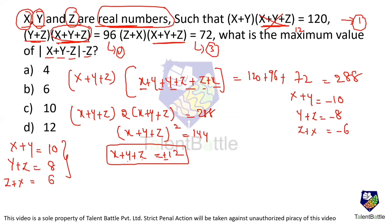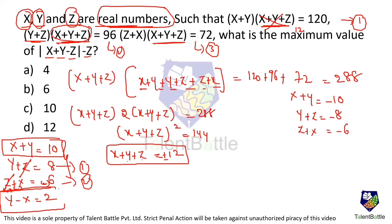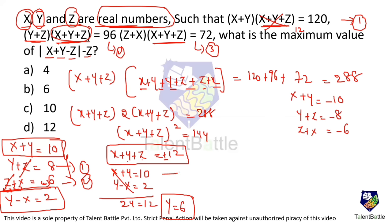Solving the positive case: subtracting the equation z+x = 6 from y+z = 8 gives y - x = 2. Combined with x + y = 10, adding gives 2y = 12, so y = 6. Then x = 4 and z = 2.